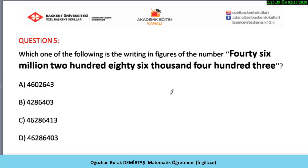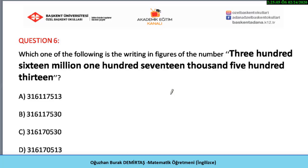Question five: which one of the following is the writing in figures of the number forty-six million, two hundred eighty-six thousand, four hundred three? Please stop the video to answer the question. Write the number and then compare your answer with the correct answer. The answer is D: 46,286,403.